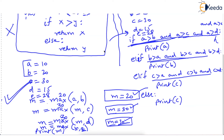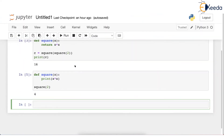Dhanashree pointed out that in the without-function version, the else should print d, not c — absolutely correct, and Dhanashree was also raising the same point. The point is that the statements become so big when writing without functions. I am trying this so that we can see some more aspects about the max function. So I'm defining: def max(x, y): if x > y: return x, else: return y.